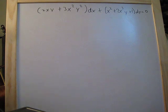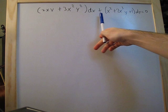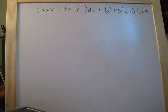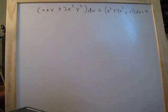Here we're going to solve an exact differential equation. Typically you'll be given this in the form: something dx plus something dy is equal to zero. If you're not given it in this form, you'll need to get it into this form to use this method.